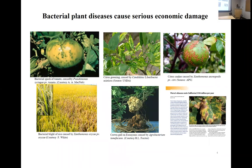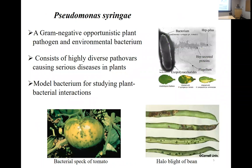There are also a lot of plant diseases caused by bacteria that result in major economic damage. One of the important plant pathogens is Pseudomonas syringae, the pathogen we work with. It is a gram-negative bacterium found almost everywhere in the environment and is an opportunistic plant pathogen under favorable conditions. It consists of highly diverse pathovars — almost 60 — that cause serious diseases in many different plants.